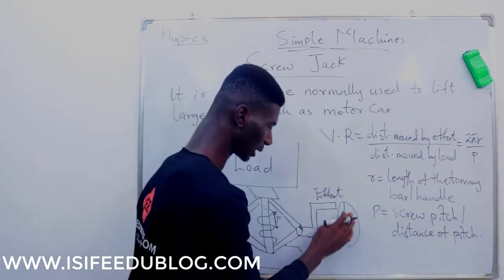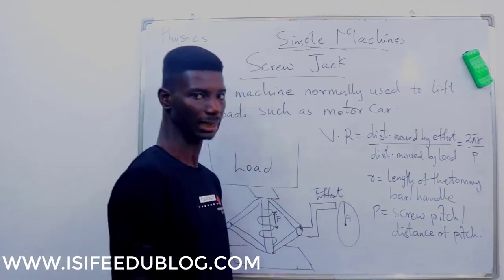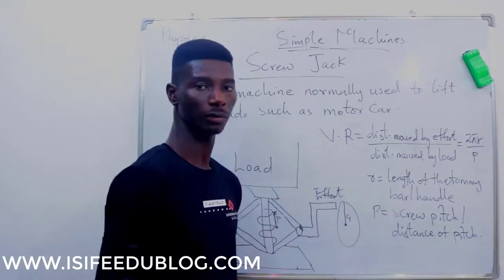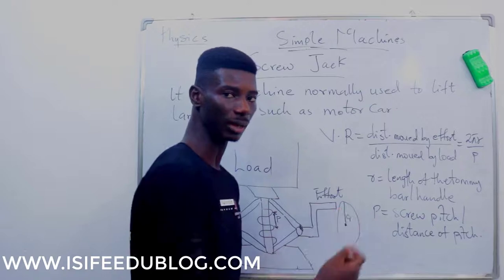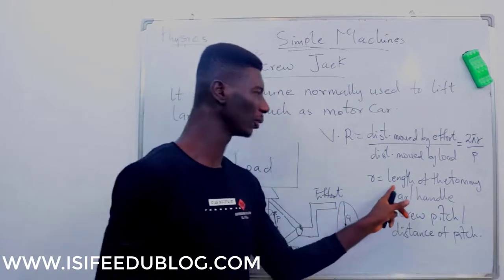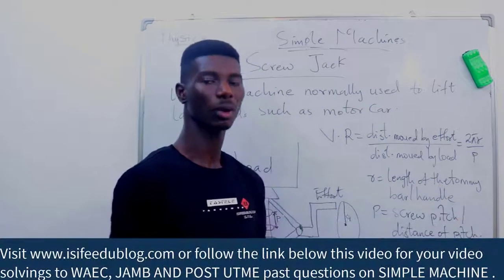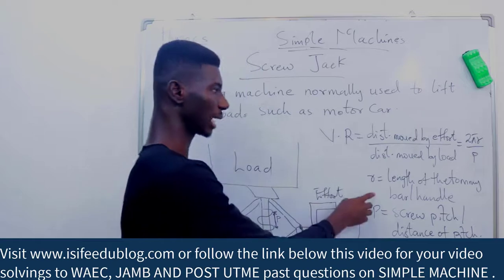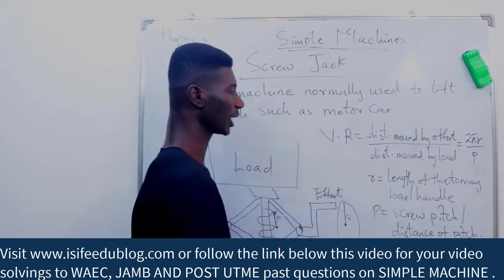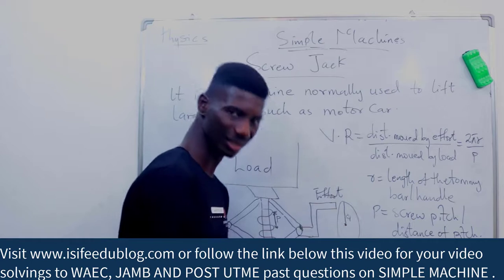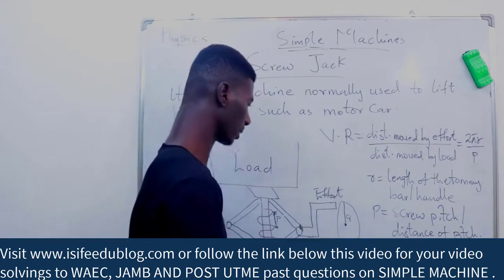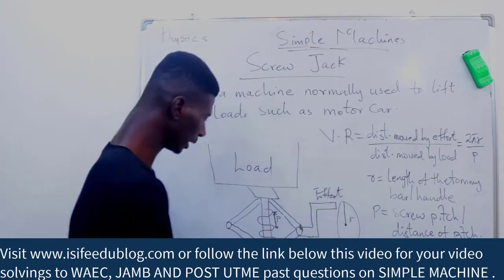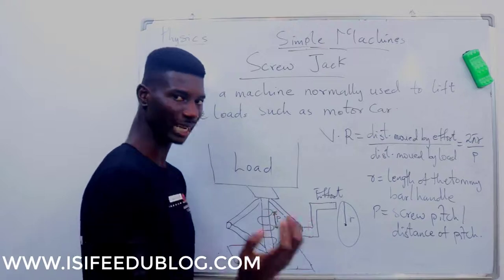Some textbooks use 'a' instead of 'r' — it doesn't matter which textbook you are reading. 'a' is equal to the radius of the circle, which is the length of the tommy bar or handle. Sometimes they might call it the radius of the circle made by the handle, in which case you use 'r'. So whether you write 2πa or 2πr, they mean the same thing.